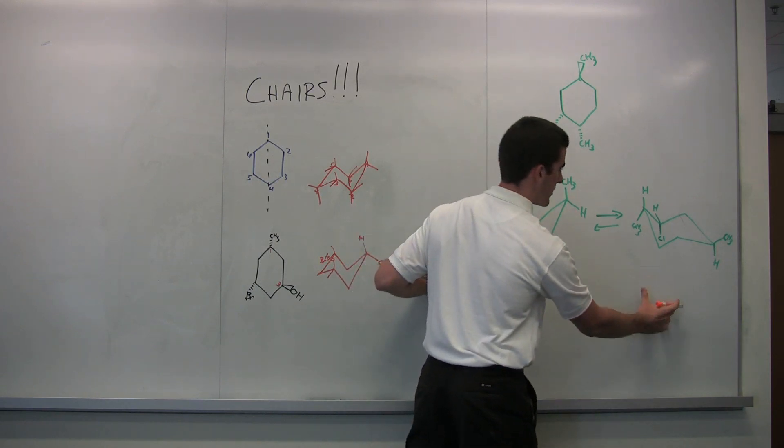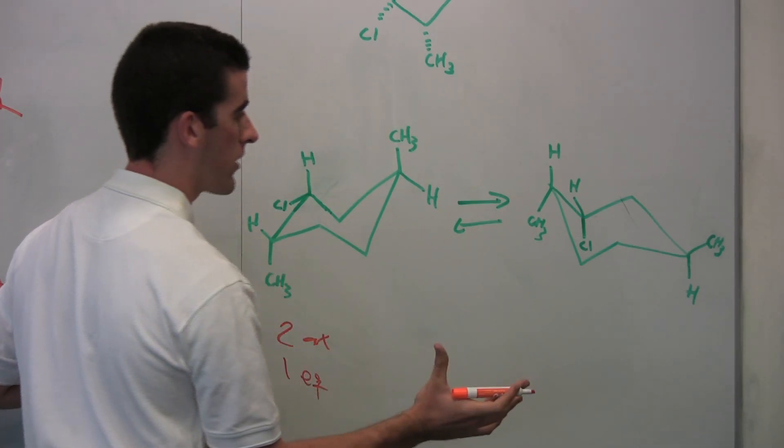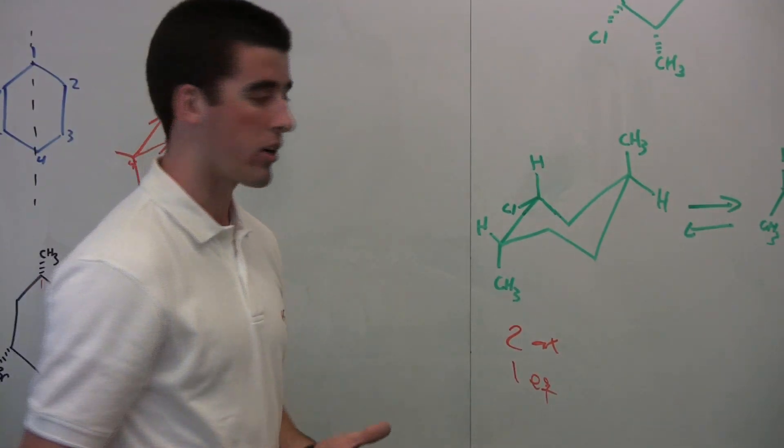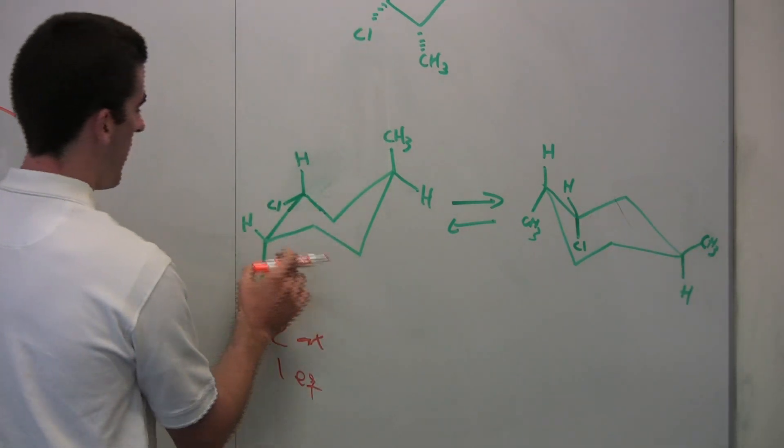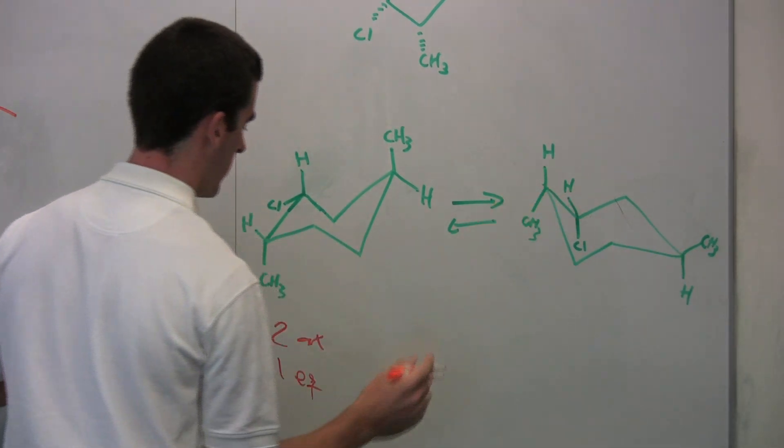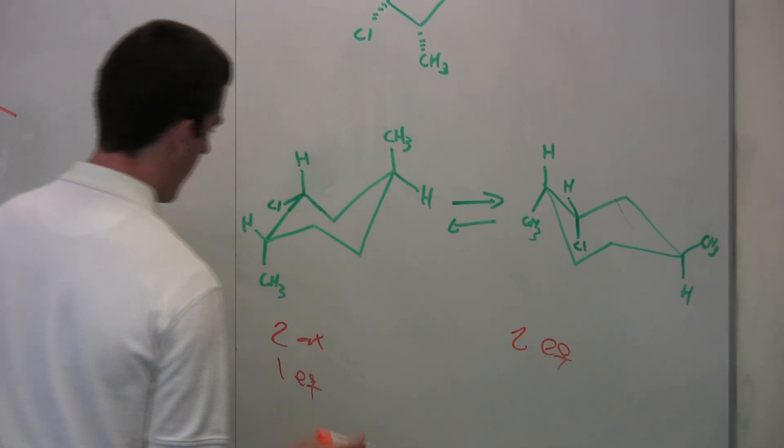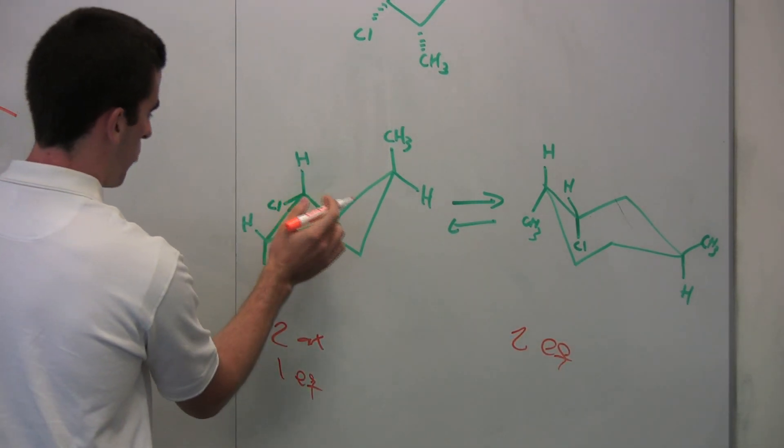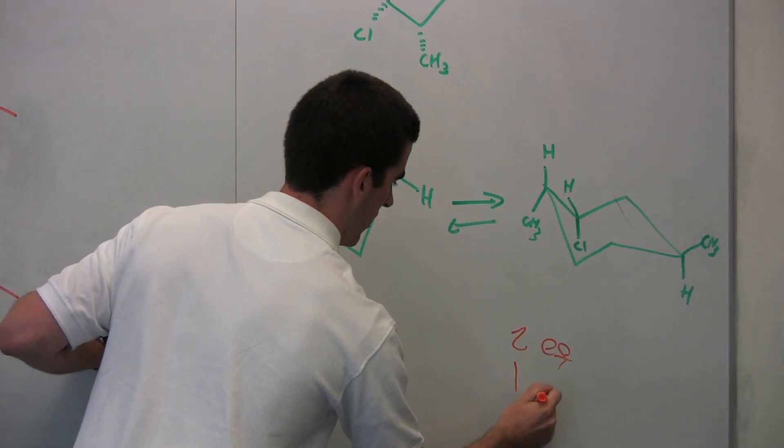So in our second conformer here, we have two things, two axials that are no longer axial. It's a gain of stability because they're no longer axial. This was axial, now it's equatorial. This was axial, now it's equatorial. So our two things that were axial are now equatorial. And then our one substituent that was equatorial is now axial there.